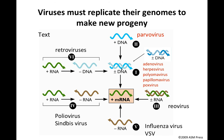The single-stranded DNA genomes are shown here, and the example we will use is a parvovirus — a small icosahedral virus containing a single-stranded DNA genome. To make mRNA from a single-stranded template, you have to first make it double-stranded, then from the double-stranded DNA you make mRNA. We'll also discuss viruses with double-stranded DNA genomes: adenoviruses, herpes viruses, polyomaviruses, papillomaviruses, and poxviruses — all with double-stranded DNA genomes of various configurations, either circular, linear, or even hairpin.